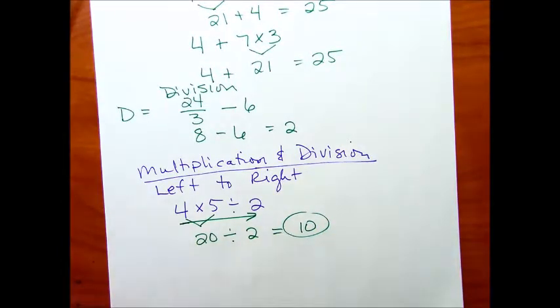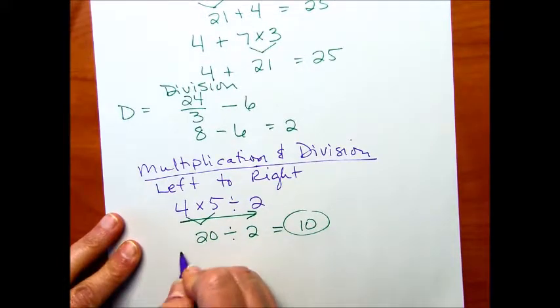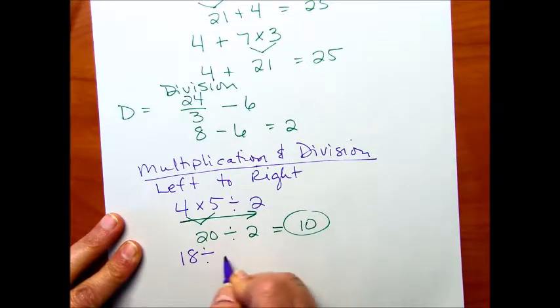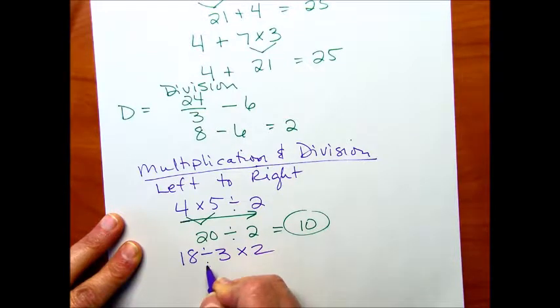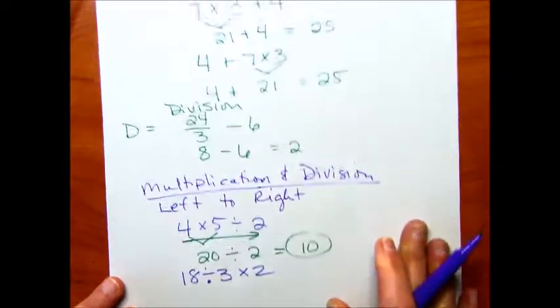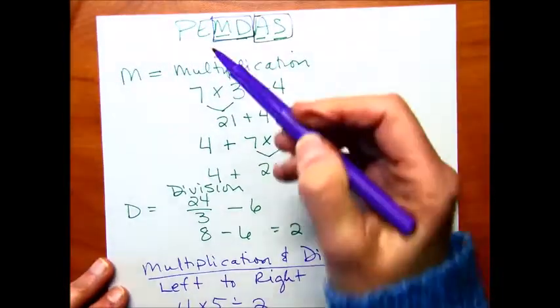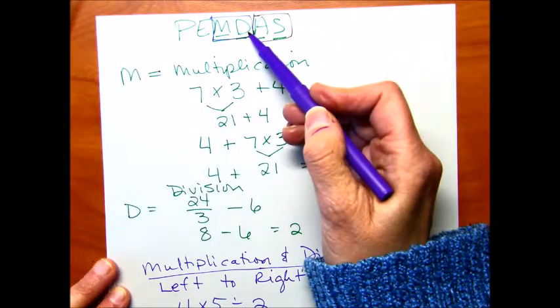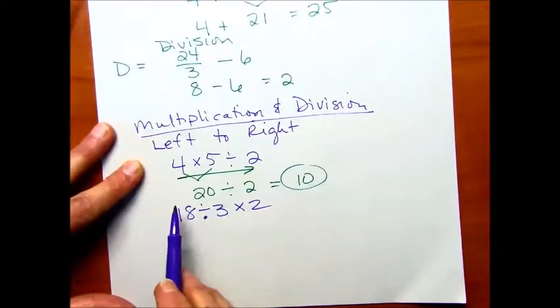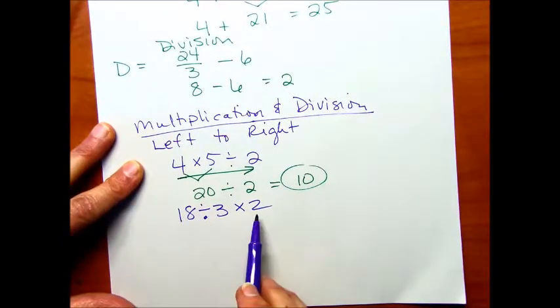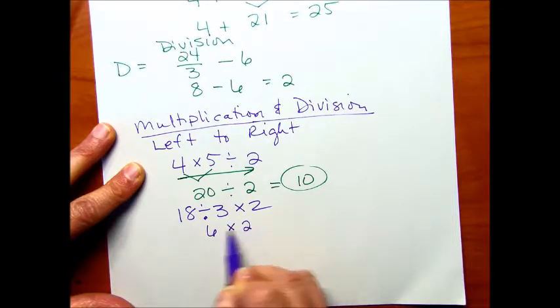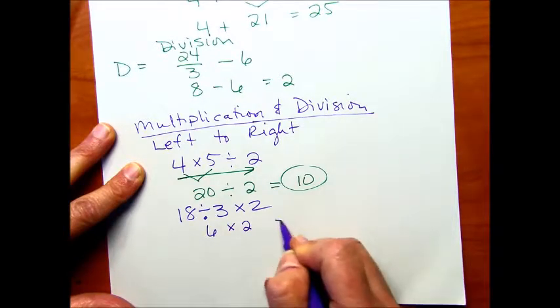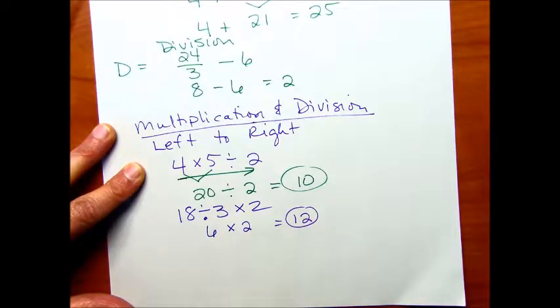Let's do another one. Say we have, we'll do division first. Say we've got 18 divided by 3, and then we want to multiply that by 2. And you might think, well, wait a minute, I'm supposed to multiply before I divide. But that's not the case. If you have multiplication and division in your expression, you just go left to right. So we're going to divide first. That will give us 6 times 2 equals 12.